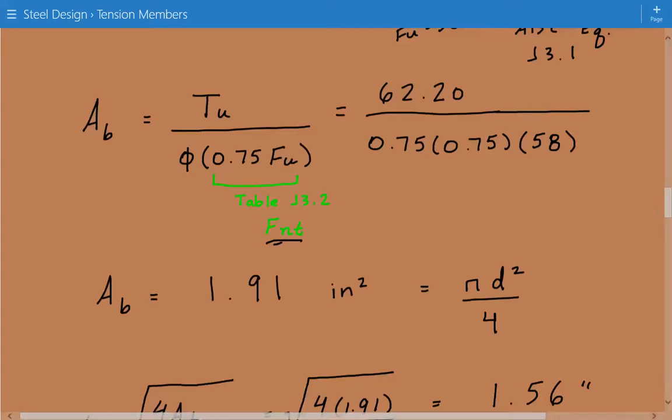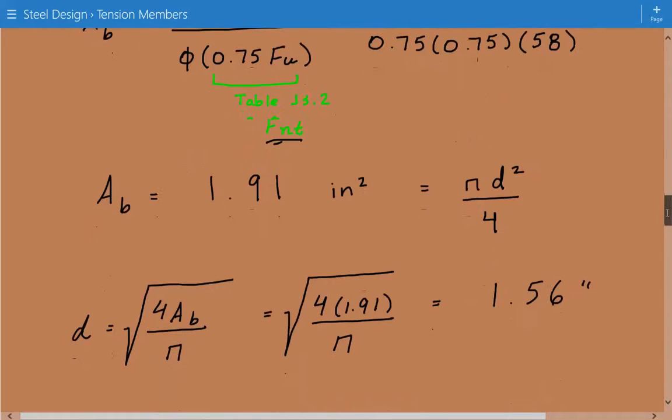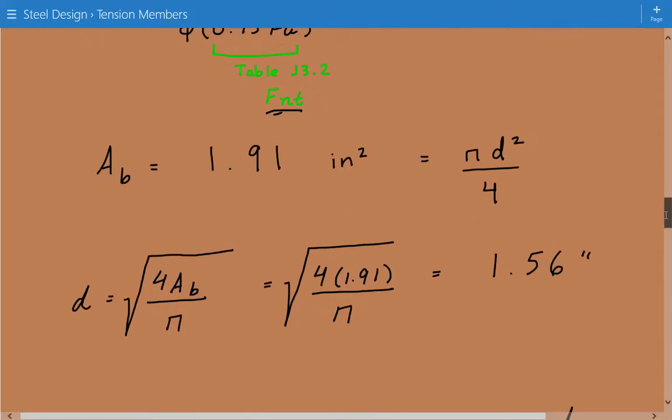So our required cross-sectional area of our rod is equal to 1.91 inches squared, and that's equal to pi d squared over 4. Now we rearrange this equation to solve for d, and d is equal to the square root of 4 times the cross-sectional area divided by pi.